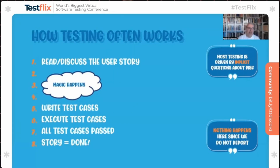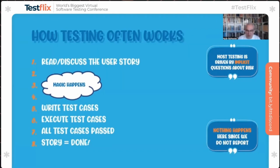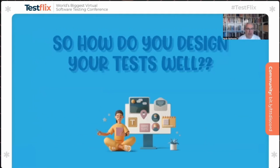If I look at how people often test, it's like this: they get a user story, they read it, magic happens, they write test cases, execute them, and when they're all done and all passed — and sometimes they're not even all passed — the story is done and they pick up the next story. This is really worrisome, because building a product is not about cutting it up into stories and when all the stories are done, your product works. There's much more to it.